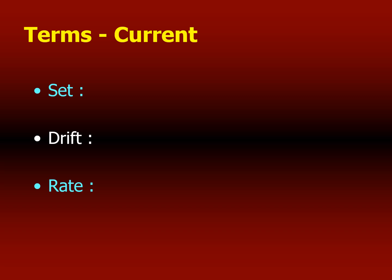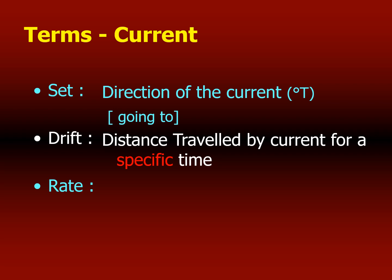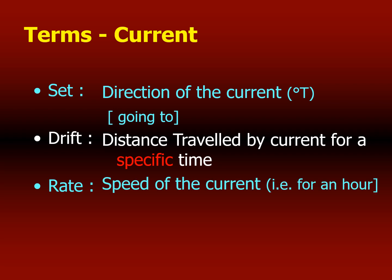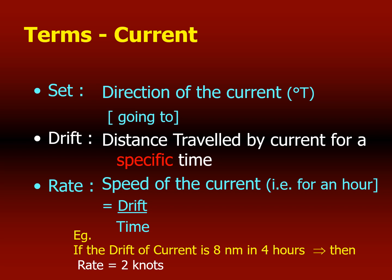In terms of current, there are three terms you should be very familiar with. The first is set, which determines the direction of the current. The second is drift, which is the distance traveled by the current for a specific time. The third is rate, which is the speed of the current, especially for one hour. Drift over time will determine the rate of the current — just like distance over time determines the speed of a vessel.